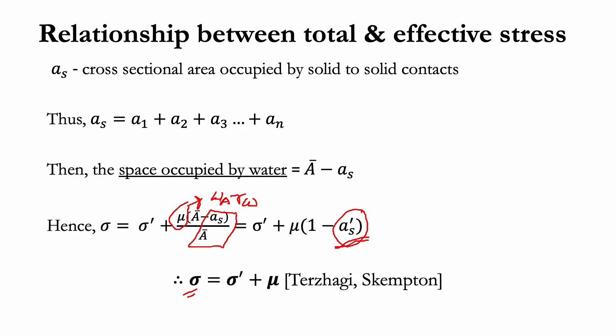The concept of effective stress — the principle of effective stress — was first introduced by Terzaghi, and Skempton introduced the relationship between total and effective stress in 1960.